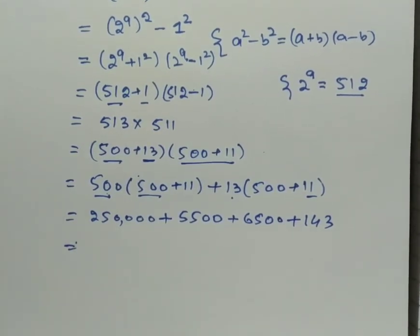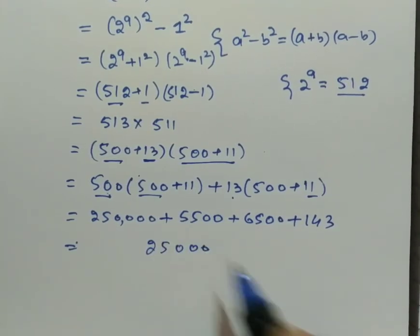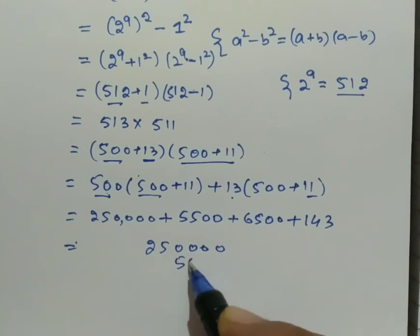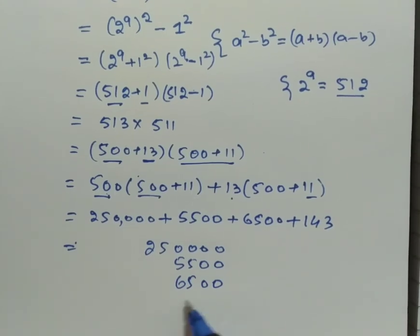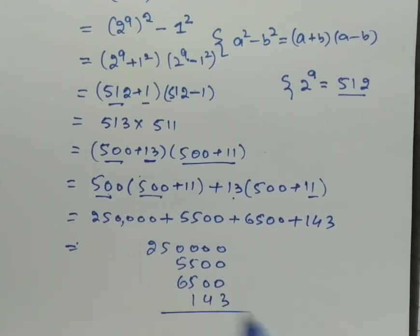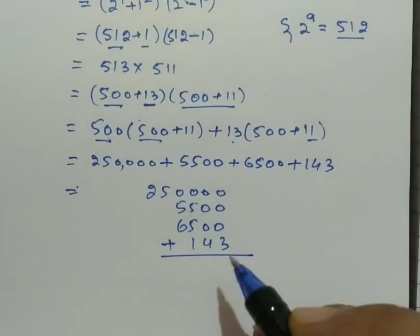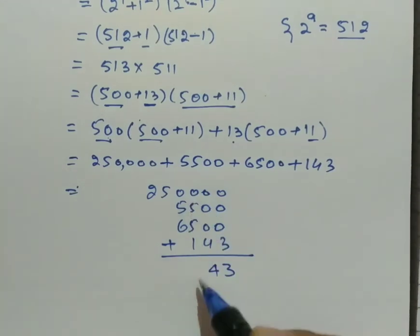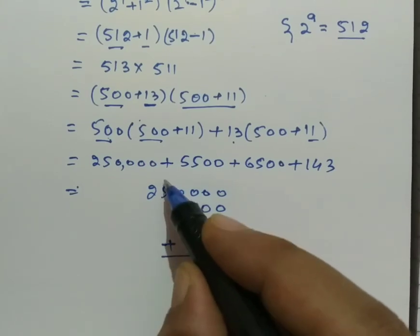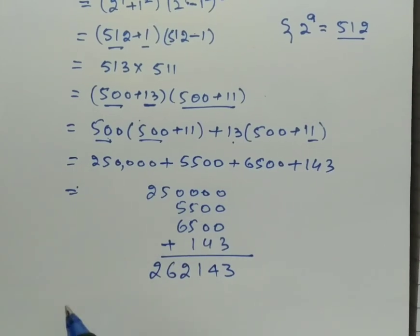Now we will add all these values: 250,000, 5,500, 6,500, and 143. We write them in place and add. 3, then 4, then 5 with carry becomes 1, then 2, giving us 6, and finally 2.